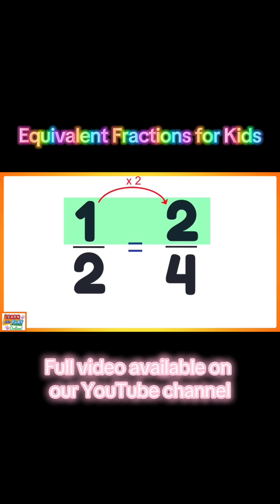And remember the golden rule here: what you do to the top, you must do the same to the bottom. So 2 times 2 would give you 4.